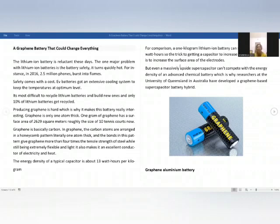Producing graphene is hard, which is why it makes this battery really interesting. Graphene is only one atom thick. One gram of graphene has a surface area of 2,629 square meters, roughly the size of 10 tennis courts.